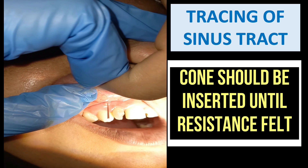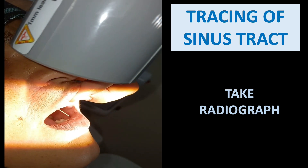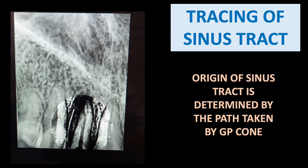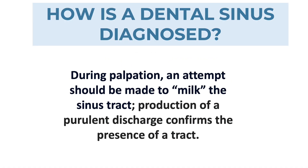Once we feel resistance, we take a radiograph to confirm the diagnosis — whether the tract is related to the lateral incisor or to the canine. After taking the X-ray, you can see the IOPA showing the GP cone. The origin of the sinus tract is determined by the path taken by the GP cone. As you can see in the figure, the GP cone is related to the lateral incisor, meaning the sinus tract is not related to the canine but to the lateral incisor.